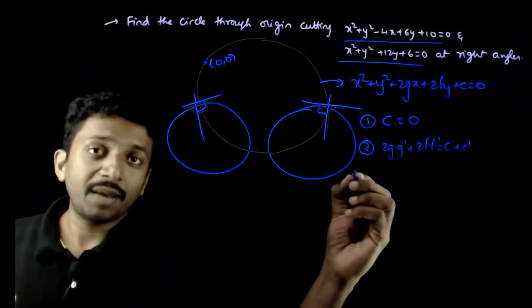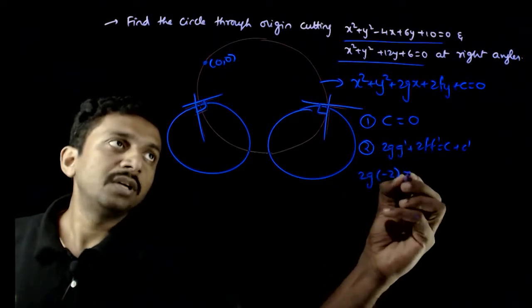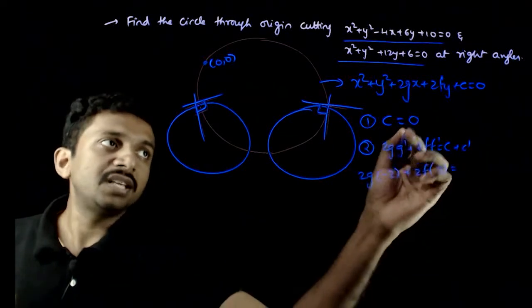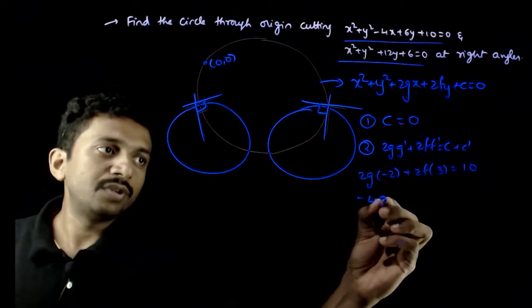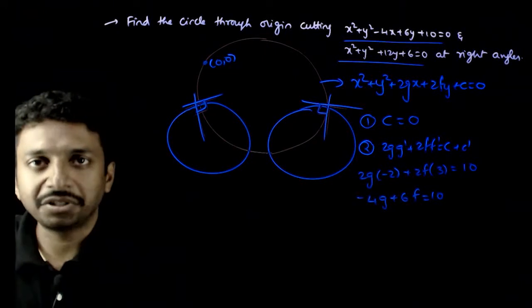Substitute and apply. So, you have 2g into minus 2 plus 2f into 3 is equal to c is already 0, so you have 10. That is, minus 4g plus 6f is equal to 10. It's the second condition.